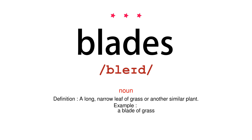Noun. Definition: a long, narrow leaf of grass or another similar plant. Example: a blade of grass.